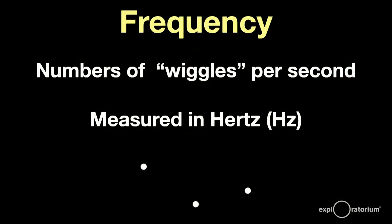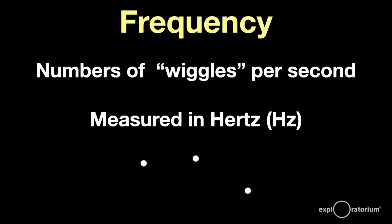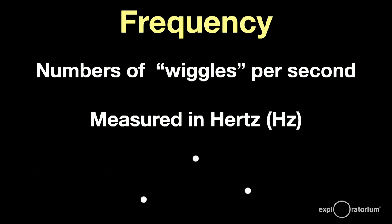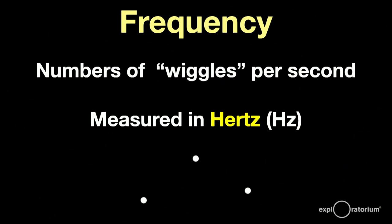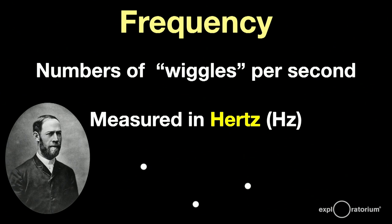Another jargon word we need to understand is frequency — simply the number of wiggles per second. Anything that's vibrating, you can measure the number of wiggles per second, and the unit of frequency is called the hertz, abbreviated Hz, named after Heinrich Hertz, who discovered radio waves. If something is vibrating at 10 hertz, it's vibrating 10 times per second.